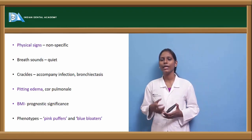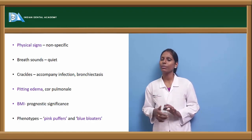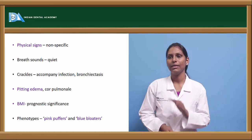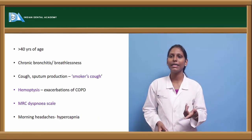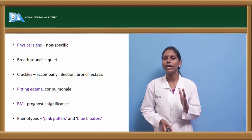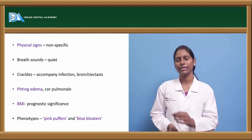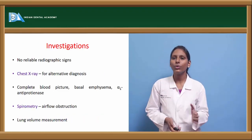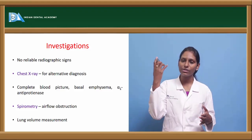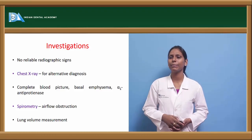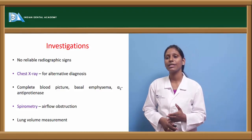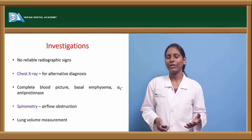Physical signs include phenotypes such as pink puffers and blue bloaters. BMI is a prognostic feature: excessive BMI indicates poorer prognosis. Pitting edema can be seen in cor pulmonale due to secondary heart failure. Crackles can be heard on auscultation accompanying infection or bronchiectasis. Breath sounds are usually quiet. Regarding investigations, there are no reliable radiographic findings specific to COPD; chest X-ray is mainly used to exclude alternative diagnoses. Full blood count, basal emphysema assessment, and alpha-1 antiproteinase levels can be helpful. Spirometry shows airflow obstruction, and lung volume measurement is a useful diagnostic feature. High-resolution CT can show pacification of emphysematous areas.